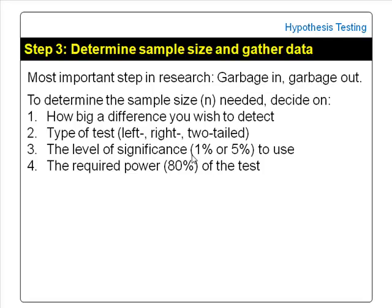Third, the level of significance, alpha, to use — which is usually 1% or 5%. And fourth, the required power of the test, which is usually 80%.